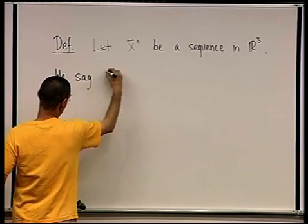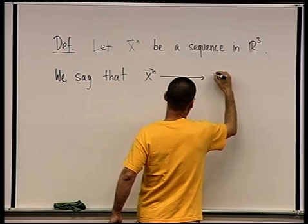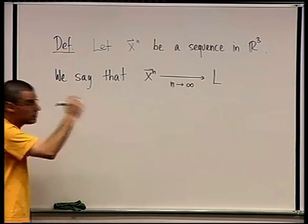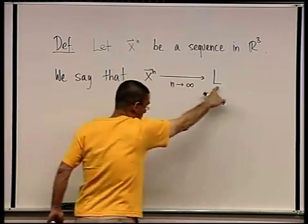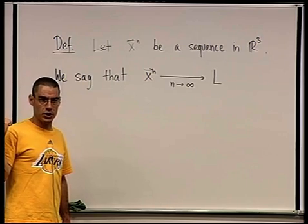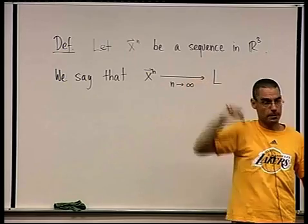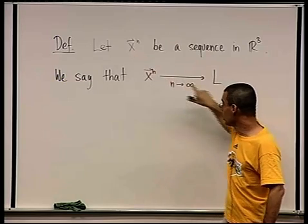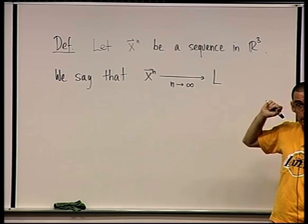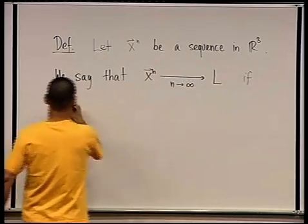We say that xn converges as n goes to infinity to some limit L. Now what is this L now? It's again an element in R3. It's a point in space. L itself has three components now. How am I going to say that?